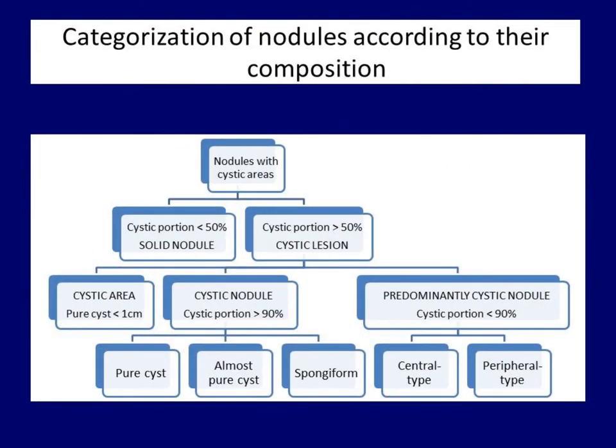First, the categorization of cystic lesions. The first task when we see cystic areas within a discrete region is to judge the ratio between solid and cystic portions. As a rule, if the solid parts prevail, the nodule should be classified as solid or dominantly solid, depending on the proportion of cystic content. If the cystic areas exceed that of the solid parts, then the lesion is a cystic one.